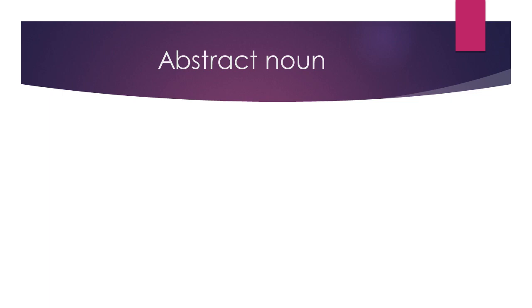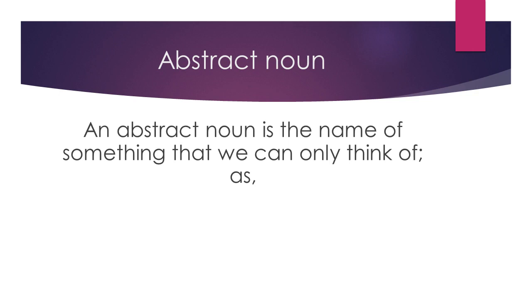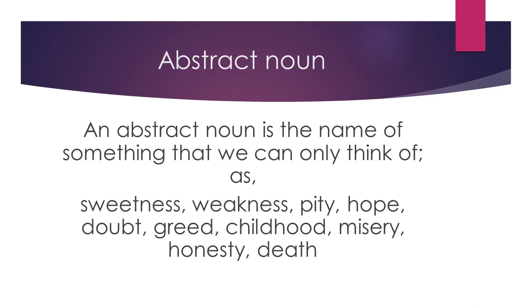Next is abstract noun. An abstract noun is the name of something that we can only think of. For example, if I say 'the boy showed great courage' — we can see the sun, we can touch a book, but we cannot see or touch courage. Courage is the name of something that we can only think of. Such a name is called an abstract noun.